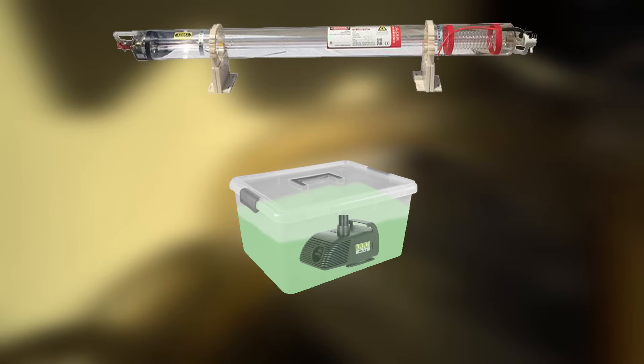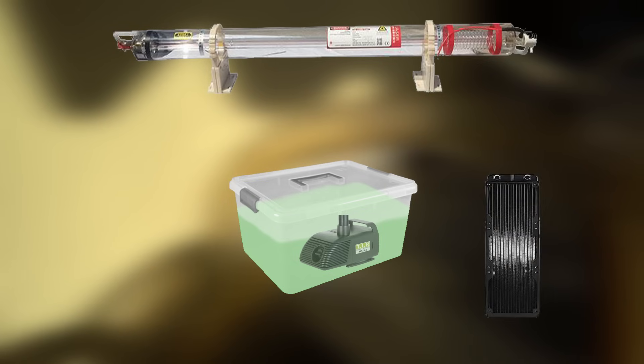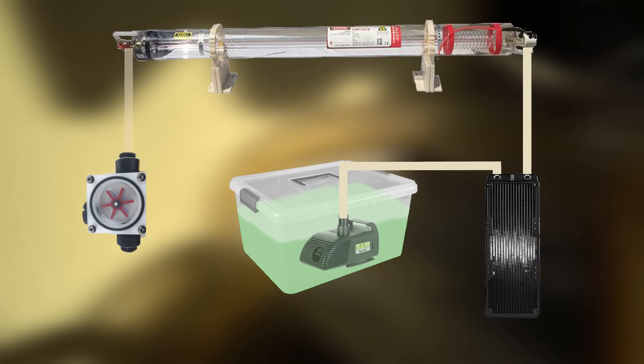Now, this is my setup. I have a 20-liter or 5-gallon reservoir with a medium-sized aquarium pump. From the reservoir, the water gets pumped through the fan-cooled radiator, passes the laser tube, then the flow indicator before it dumps back into the storage container.